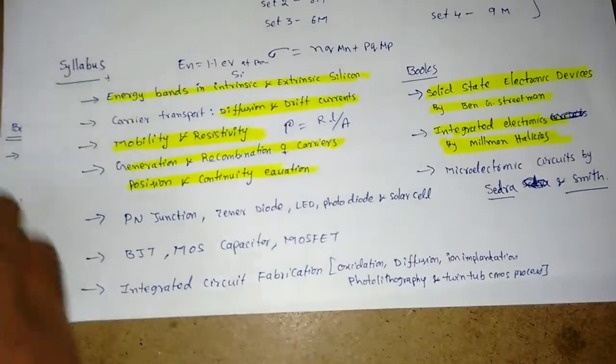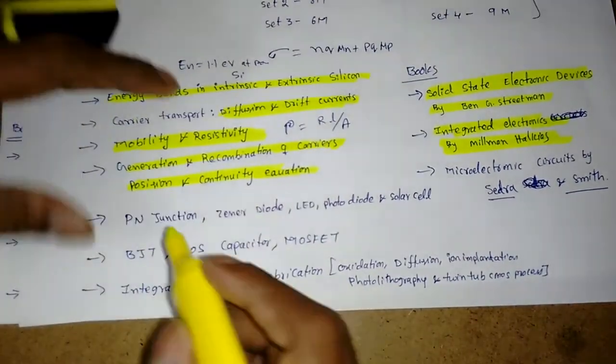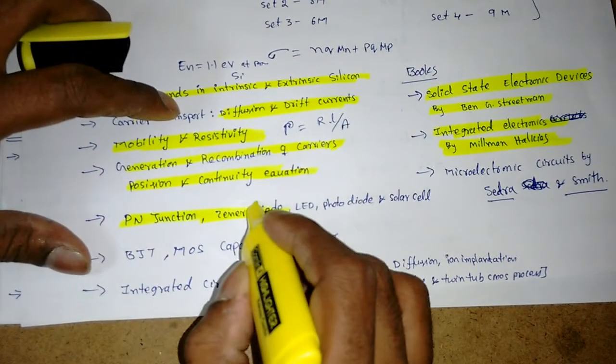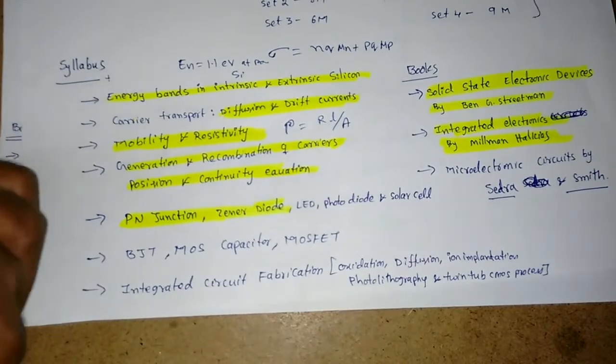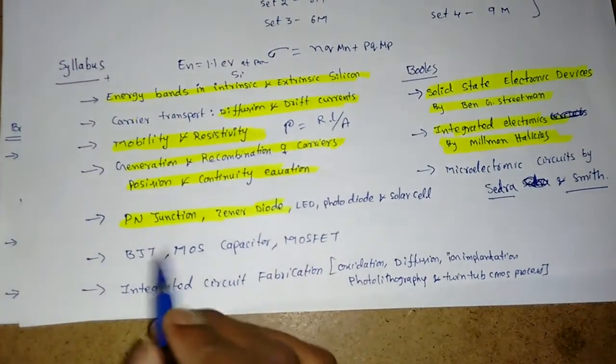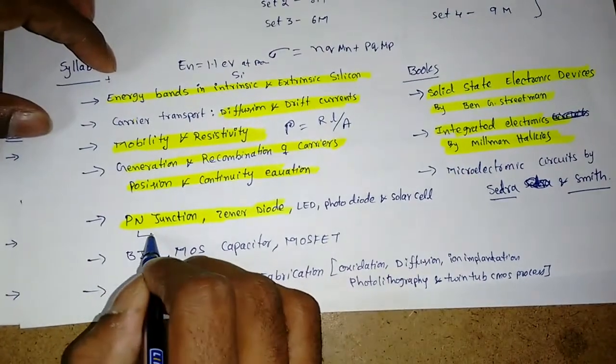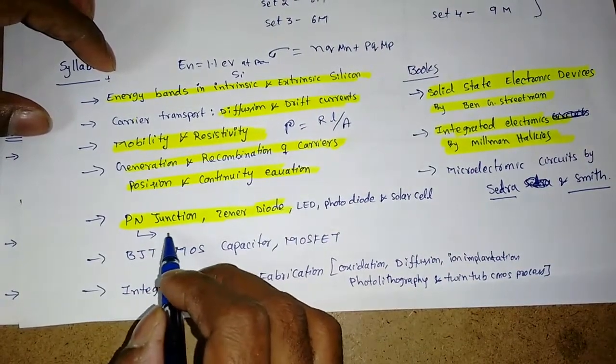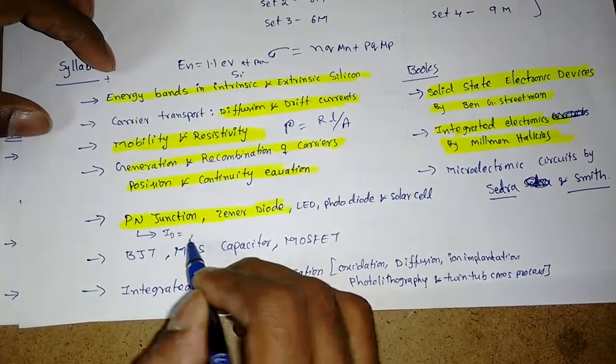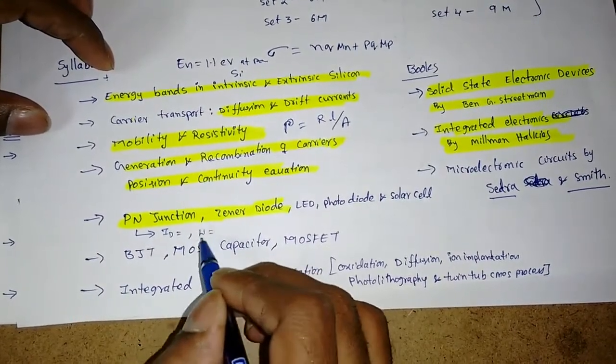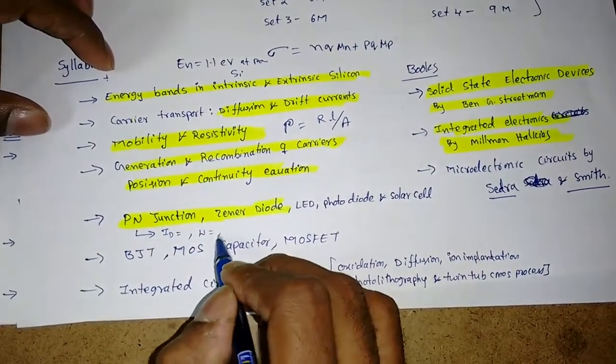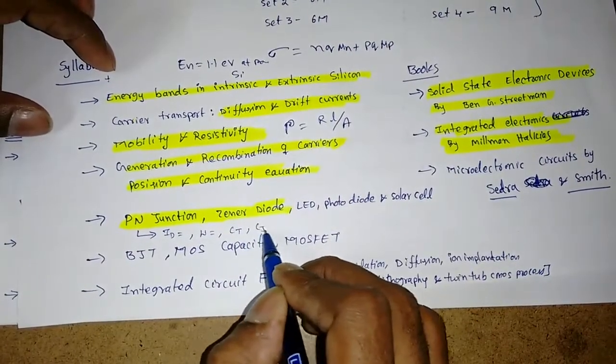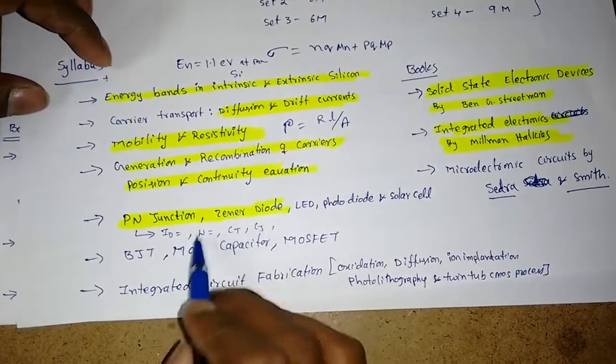Next, my concept is the PN junction and the Zener diode concept. In PN junction, there is not much concept—what is the forward bias condition, what is the reverse bias condition, what are the current equations? What is the depletion layer width in a PN diode and what is the transition capacitance or junction capacitance or depletion capacitance?